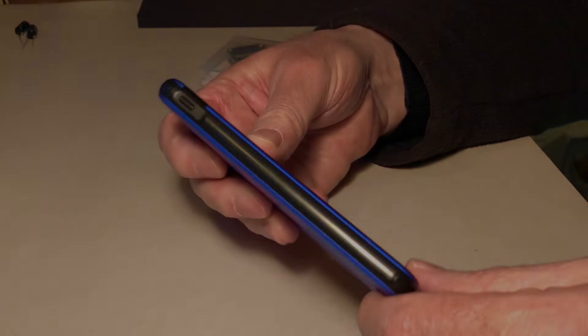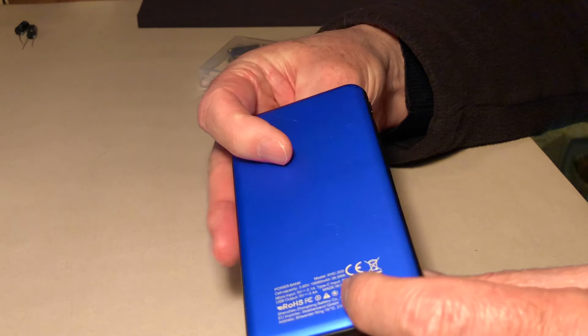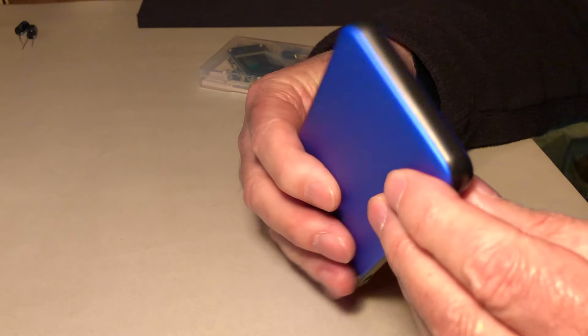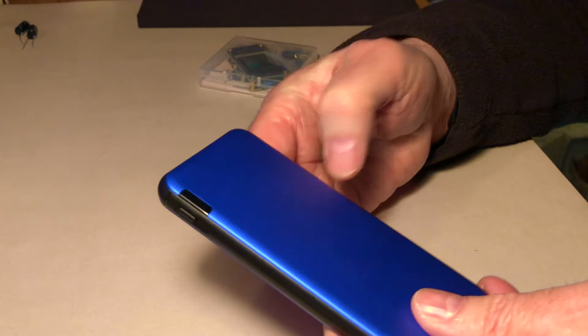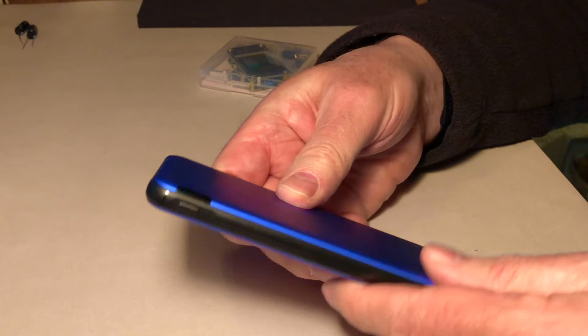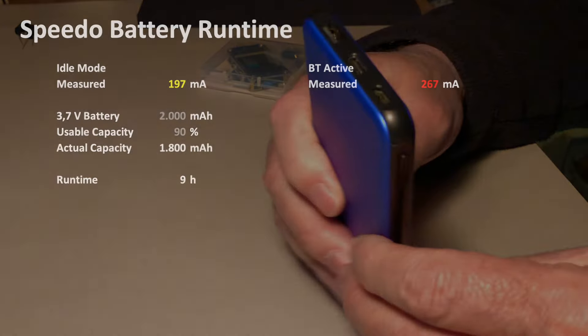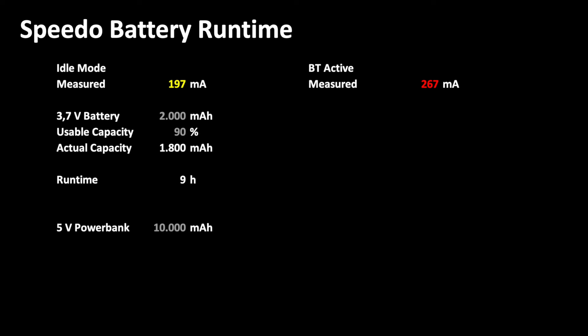In case we are using a USB power bank, the calculation is a little more complicated, because the manufacturers usually only specify the capacity of the internal 3.7V battery. In my case, it is labeled 10000 mAh. In addition to the usable capacity, we need to take into account that the voltage must be transformed from 3.7V to 5V, for which we assume a loss of 10%. So, on the USB voltage level, we are left with about 6000 mAh, giving us a runtime of 30 hours.